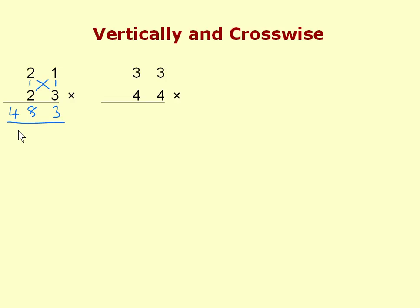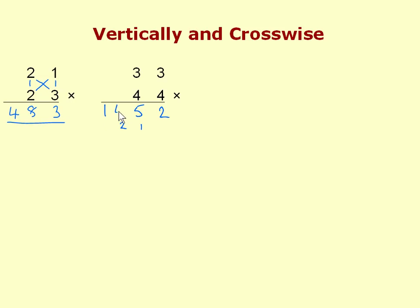Let's do one with some carries. Working right to left: 3 times 4 is 12, so we put down 2 and carry 1. For the crosswise step we multiply 3 by 4 and 3 by 4, giving 12 and 12, which is 24, and with the carry that's 25 — put down 5 and carry 2. The third step, vertically on the left: 3 times 4 is 12, and with the carried 2 we have 14, giving the answer 1,452.